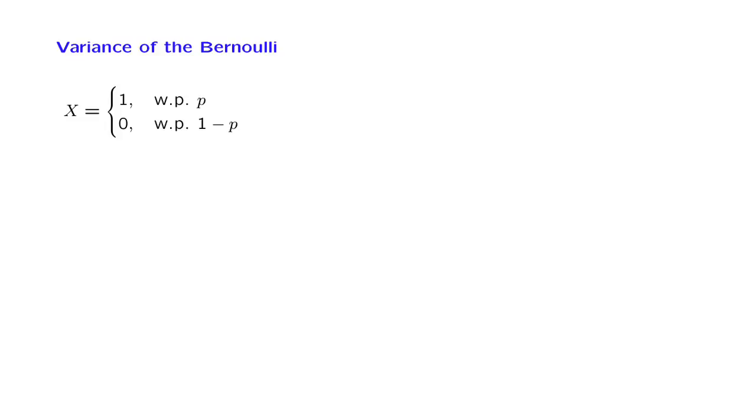So let X take values 0 or 1, and it takes a value of 1 with probability p. We have already calculated the expected value of X, and we know that it is equal to p. Let us now compute its variance.